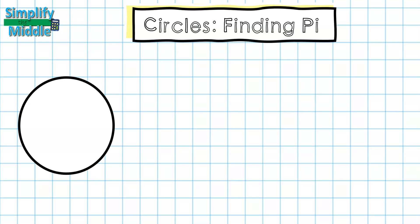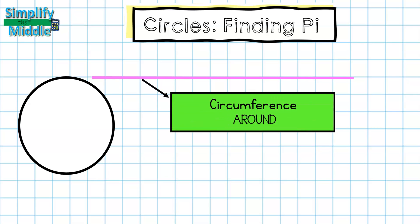First I'm going to represent my circumference, which is around my circle, with this pink line. I'm going to then take the pink line as if it was a piece of string and lay it flat after I have wrapped it around the distance of my circle. This going around the circle is known as the circumference.